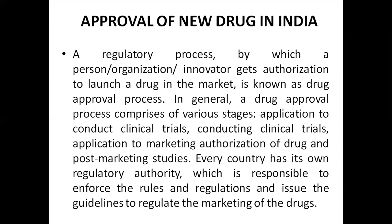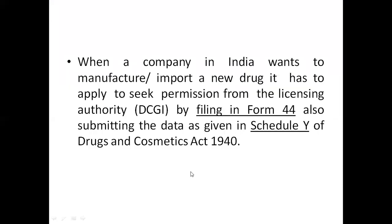Every country has its own regulatory authority responsible for enforcing rules and regulations and issuing guidelines to regulate the marketing of drugs. When a company in India wants to manufacture or import a new drug, it has to apply for permission from the licensing authority, the DCGI — Drug Controller General of India — by filling in Form 44 and submitting data as given in Schedule Y of the Drugs and Cosmetics Act 1940 and Rules 1945.